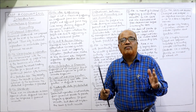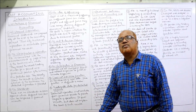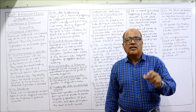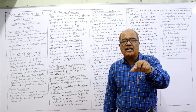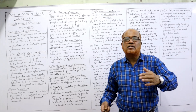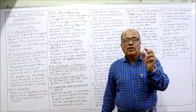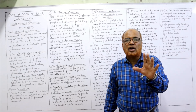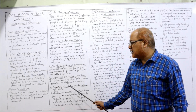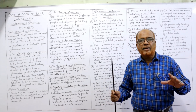The seventh limitation is that financial accounting does not aid price fixation. One of management's jobs is to fix the selling price, which is fixed after ascertaining the cost. But we cannot wait in financial accounting until the end of the year to find out the cost, so financial accounting will not be of much help to management in fixing the selling price.